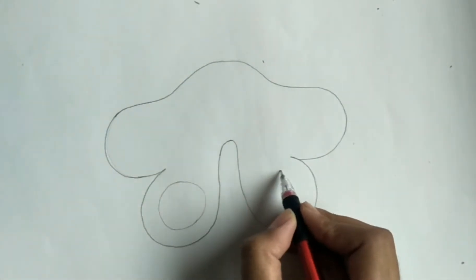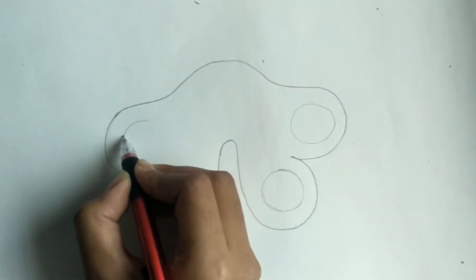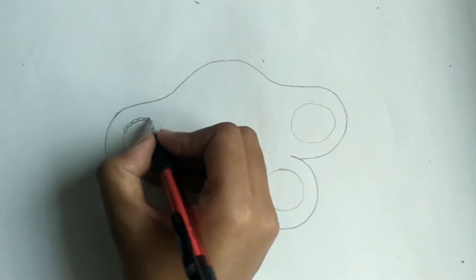two theca, that is di-thecas. Anther consists of four pollen sacs or microsporangia. Microsporangial wall has four types of layers.